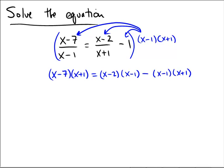Let's see what we end up getting. So distributing, here we have x squared minus 7x plus 1x, that would be minus 6x, and then minus 7 plus 1 is minus 7.